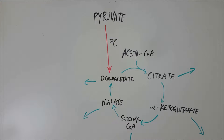Citrate synthase is the first enzyme involved in the TCA cycle and functions optimally when there is sufficient oxaloacetate and acetyl-CoA. Therefore, when pyruvate carboxylase is missing, there is less oxaloacetate and the TCA cycle cannot function efficiently, which means less ATP is synthesized.